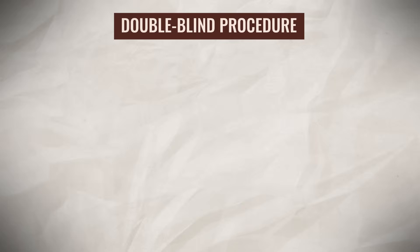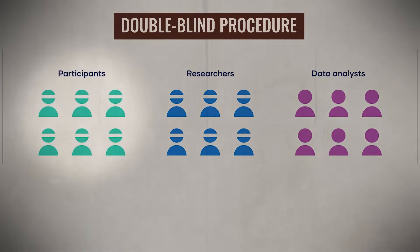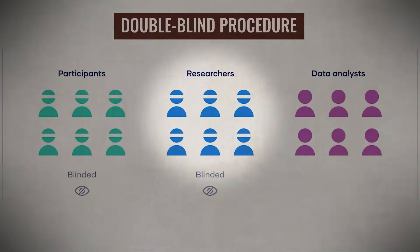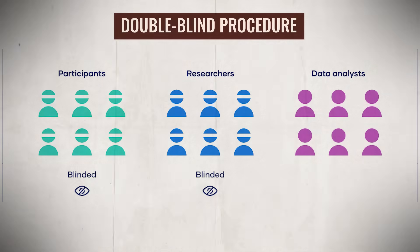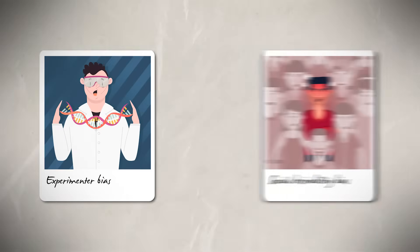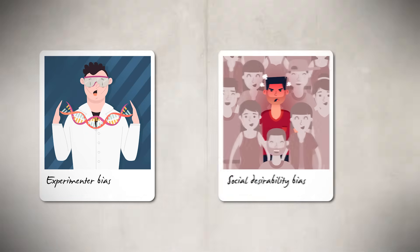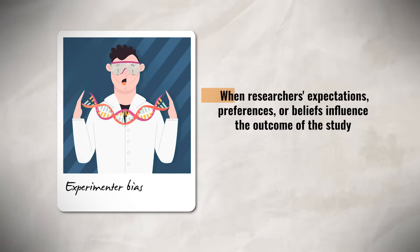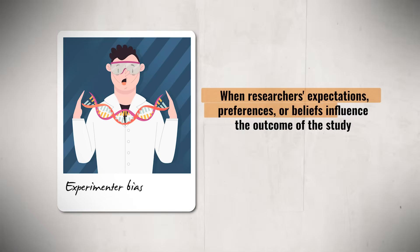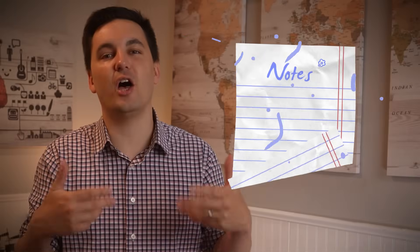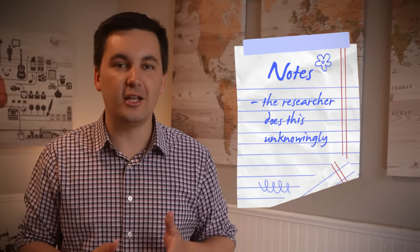The double-blind procedure is when both the participants and researchers do not know who is in the experimental or control group. This helps counter both experimenter bias and social desirability bias. Experimenter bias occurs when the researcher's expectations, preferences, or beliefs unknowingly influence the outcome of the study.